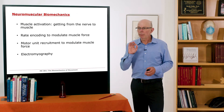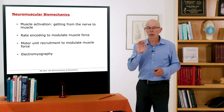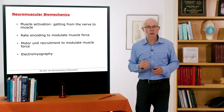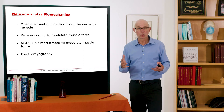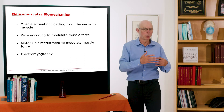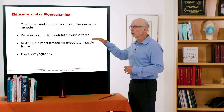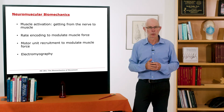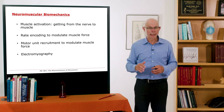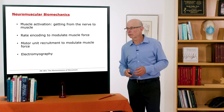The key points we'll cover are: first, muscle activation — getting from the nerve to muscle. Second, rate encoding of muscle force, which is one of the key things needed for coordination and control of movement to modulate muscle force from small to large. We really have two ways to do that: rate encoding, and motor unit recruitment. We'll finish with a description of electromyography, or EMG, which we use to estimate muscle forces.